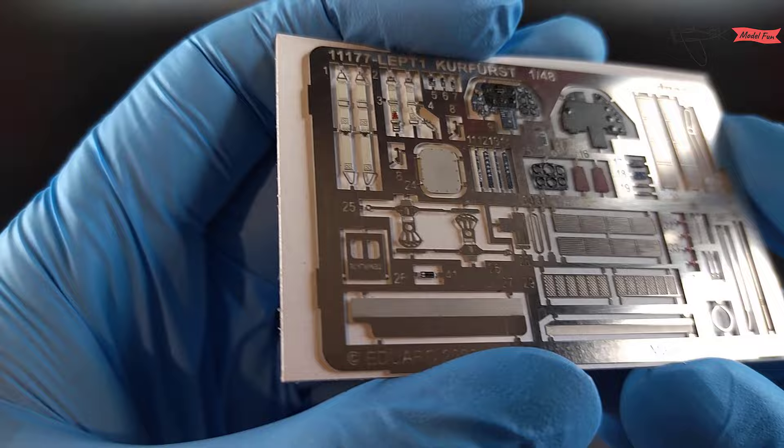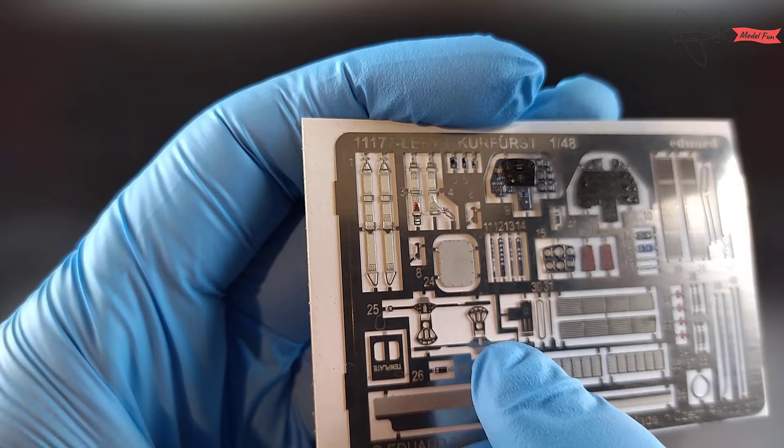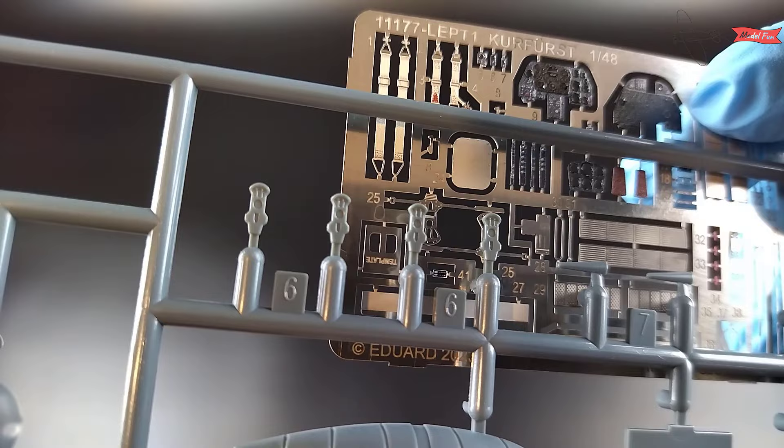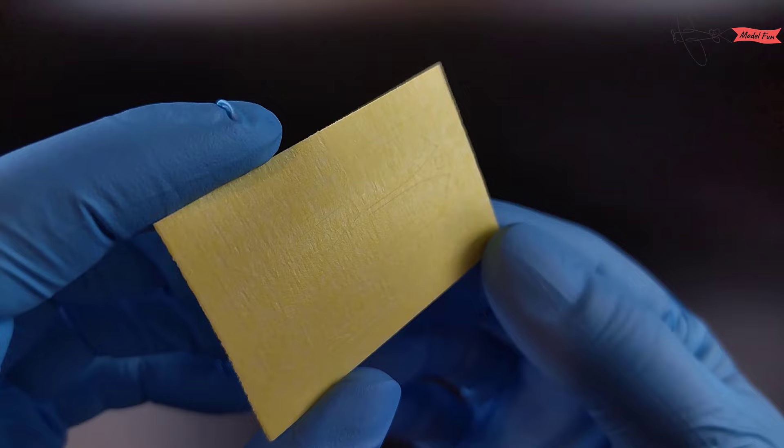Photo-etched parts look very good, they are in color. Most of them are to be used in the cockpit, so we have seat belts, we have rudder pedals but a bit out of scale, I would say they are a bit too large. We have control panel, dials and everything looks very nice.